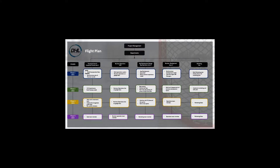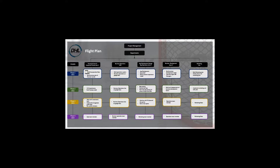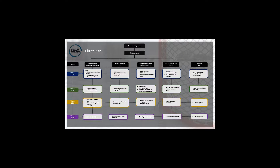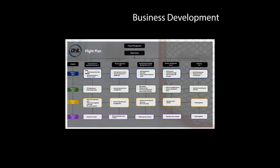I'll show you an example here of a company we're working with and taking public called DraftHouse Labs. Inside that you can see the different departments. This particular one has Corporate, and underneath that there's a lot of legal and finance issues. We've got Business Operations, which is all your in-house items. We have App Development, Business Development, and Marketing — a standard sheet that we use.